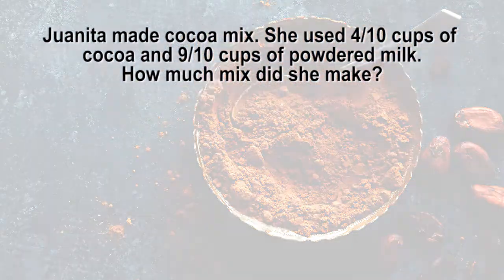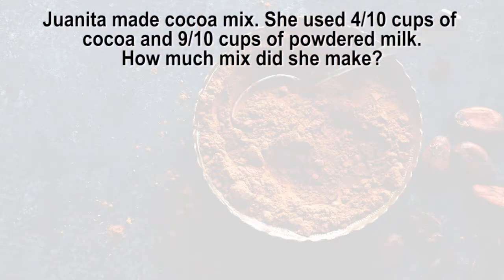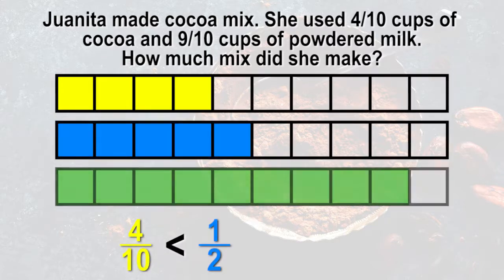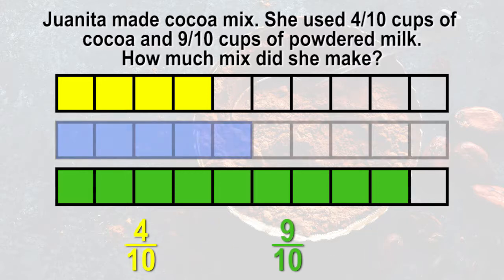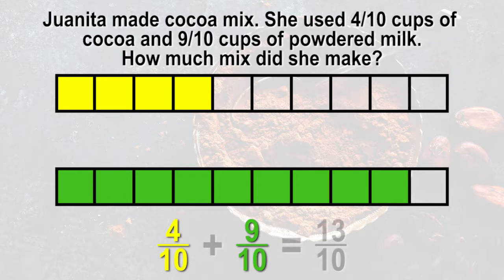Let's first estimate about how much mix Juanita made. The 4 tenths cup of cocoa is a little less than a half cup because a half cup is 5 tenths. The 9 tenths cup of milk is almost a whole cup because a whole cup is 10 tenths. The total mix will be more than 1 cup. 4 tenths plus 9 tenths equals 13 tenths or more than 1.